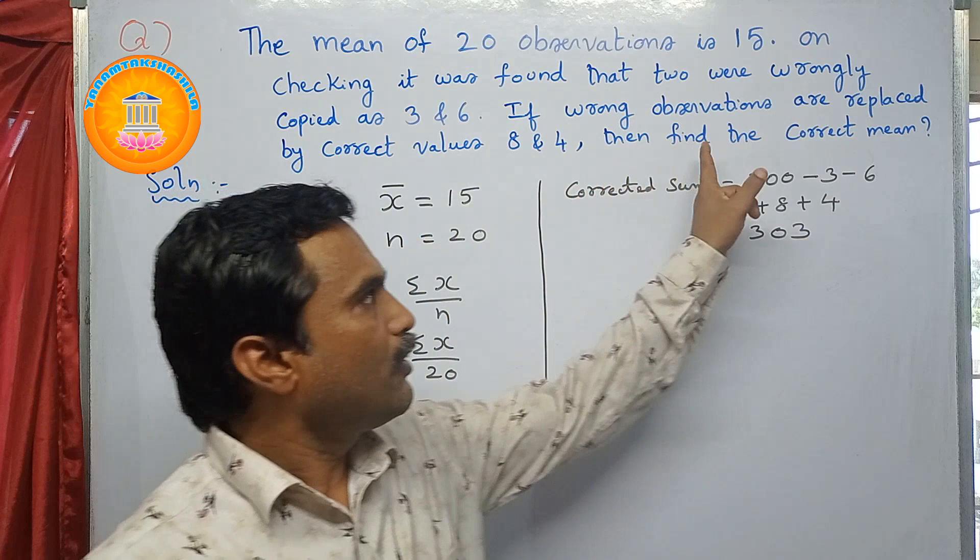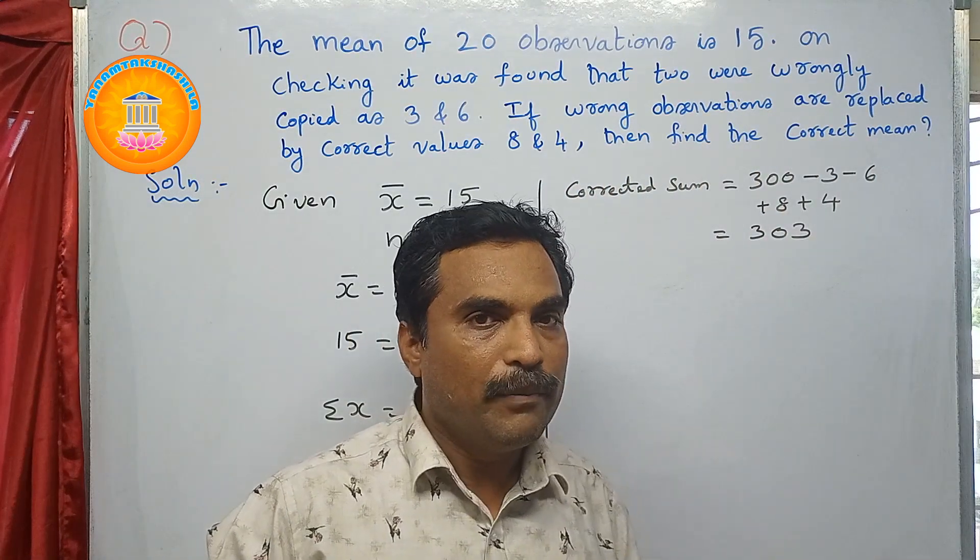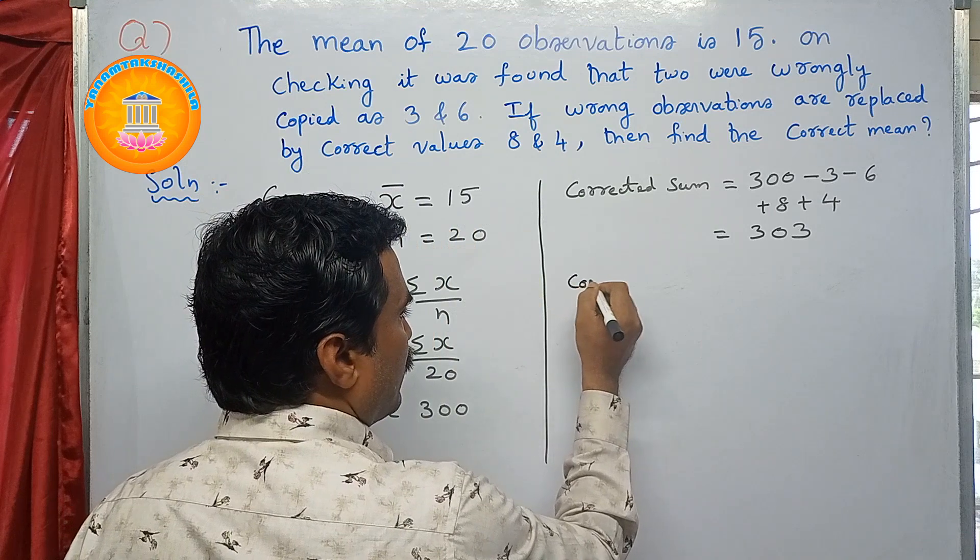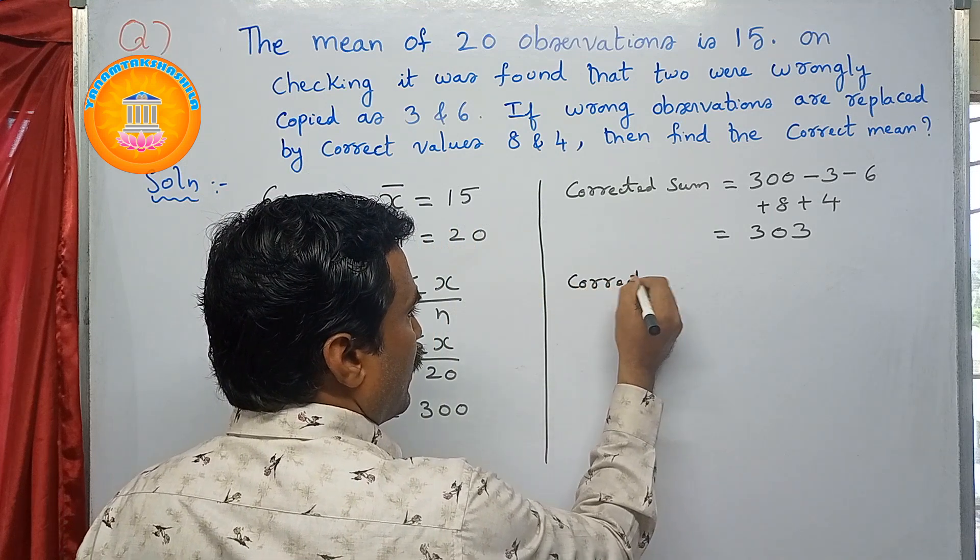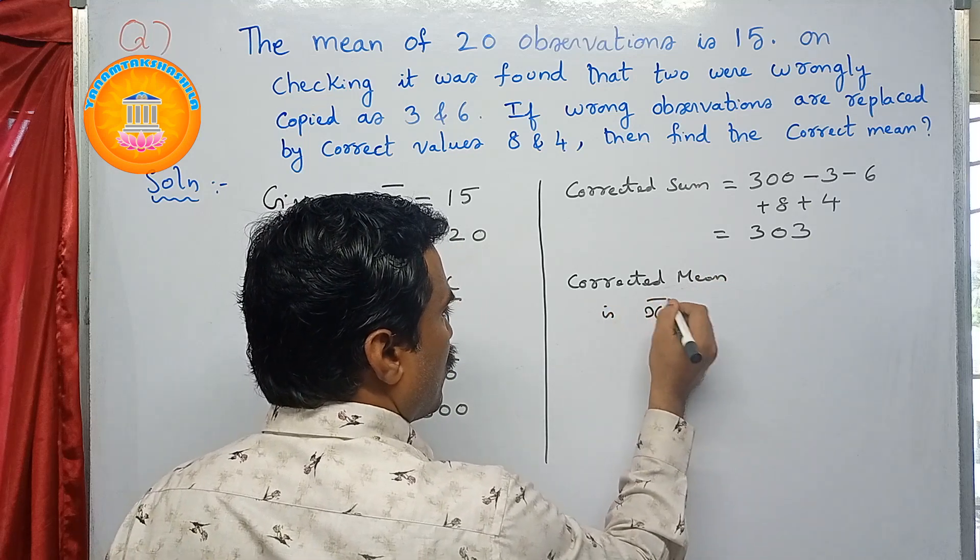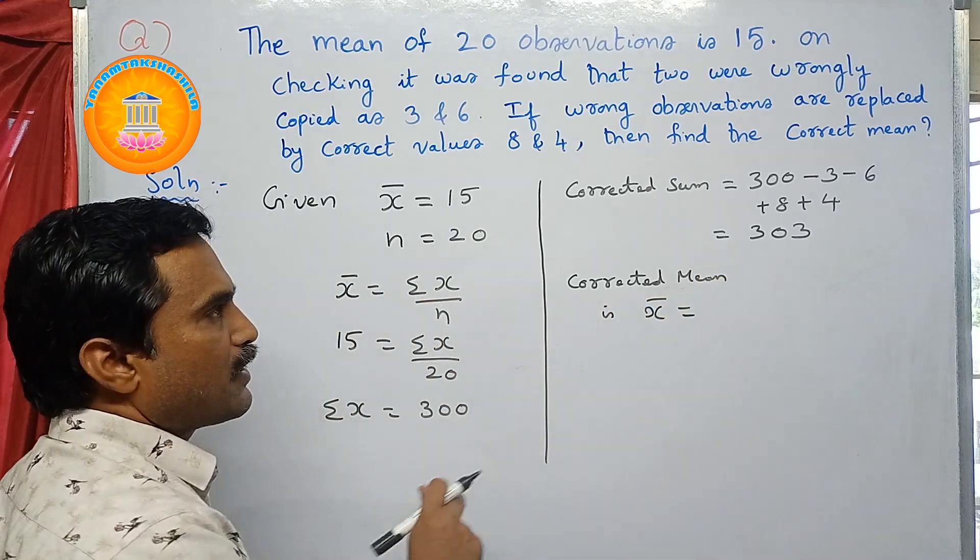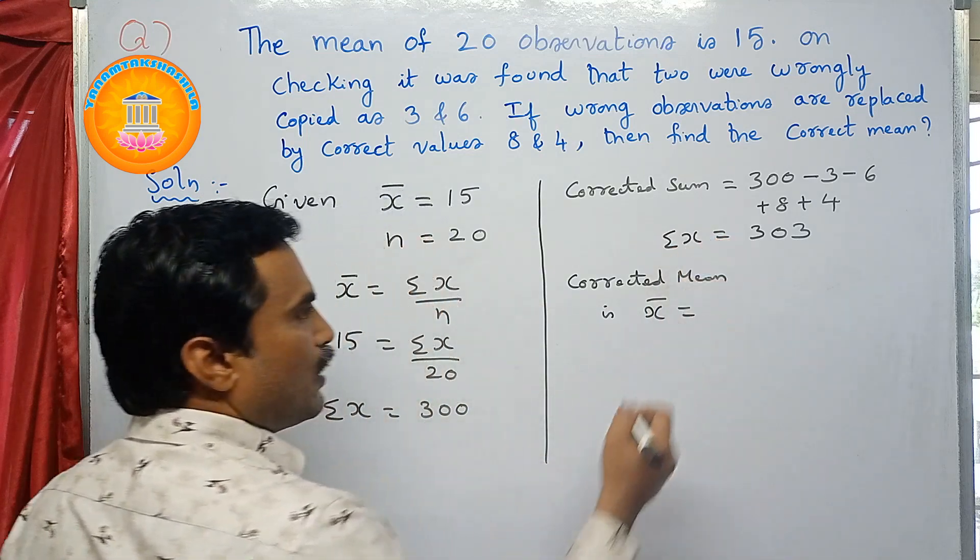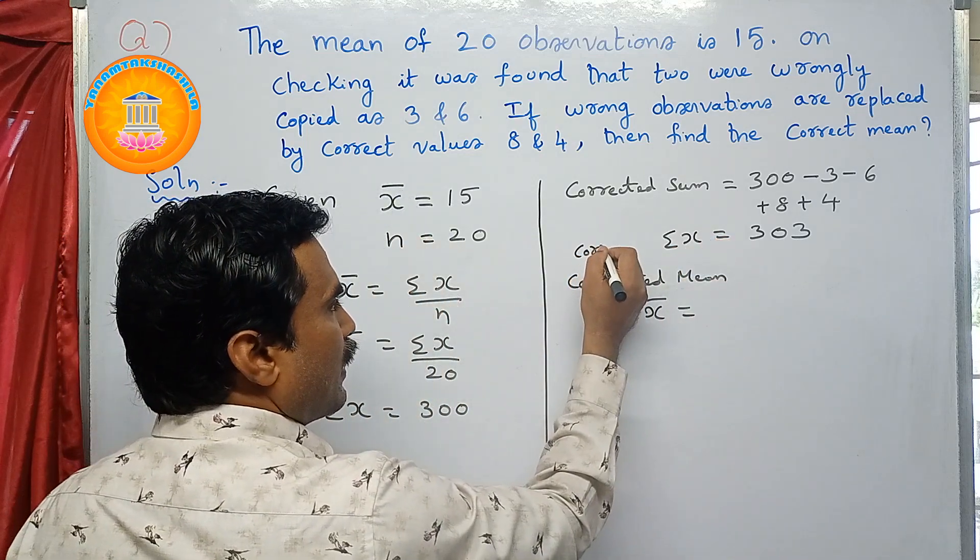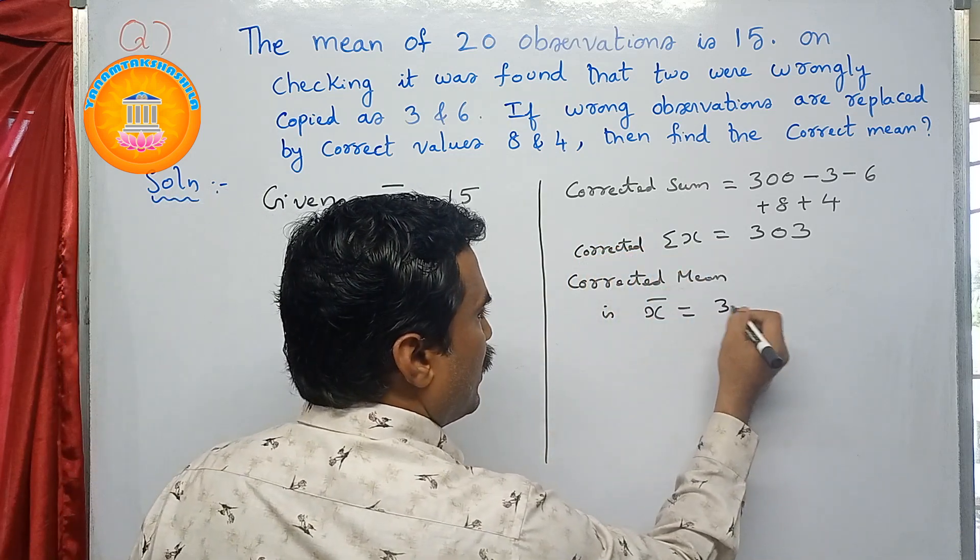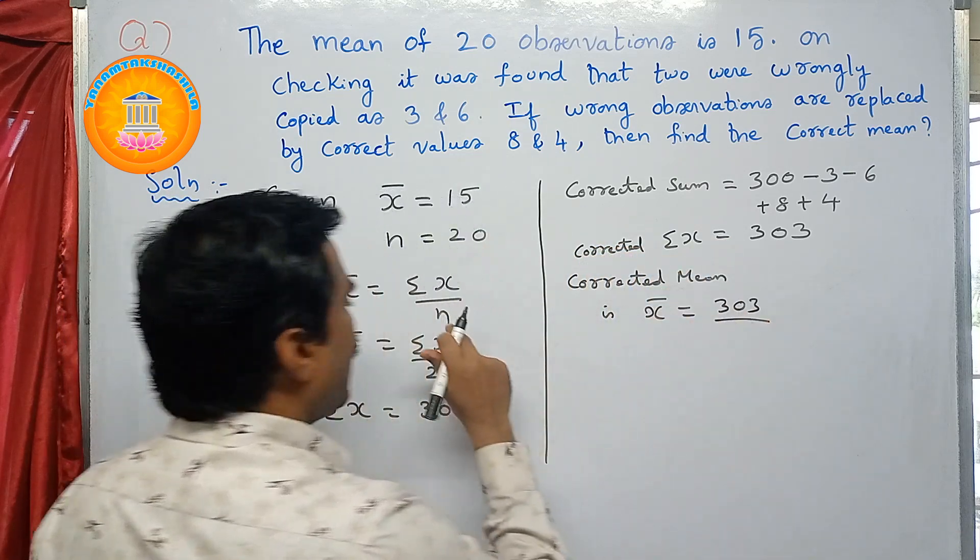Now finally, what you need to find? You need to find the corrected mean. So again, you have to use this formula. Corrected mean, x̄ = you can use the same formula Σx. So corrected sum is this one, that is Σx. So here you have to write corrected, that is 303 by n value.